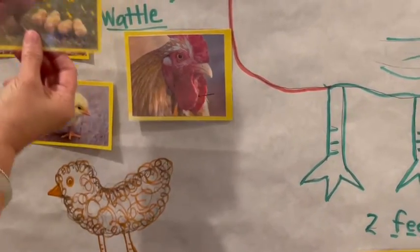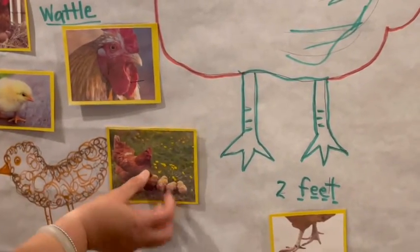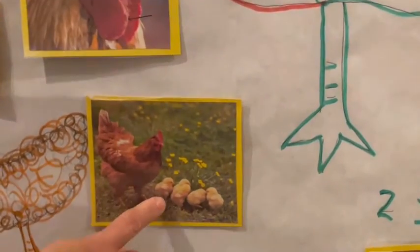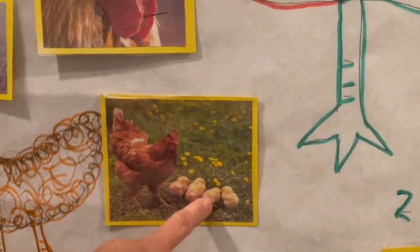And here is Mama Hen with all her baby chicks. She has one, two, three, four.